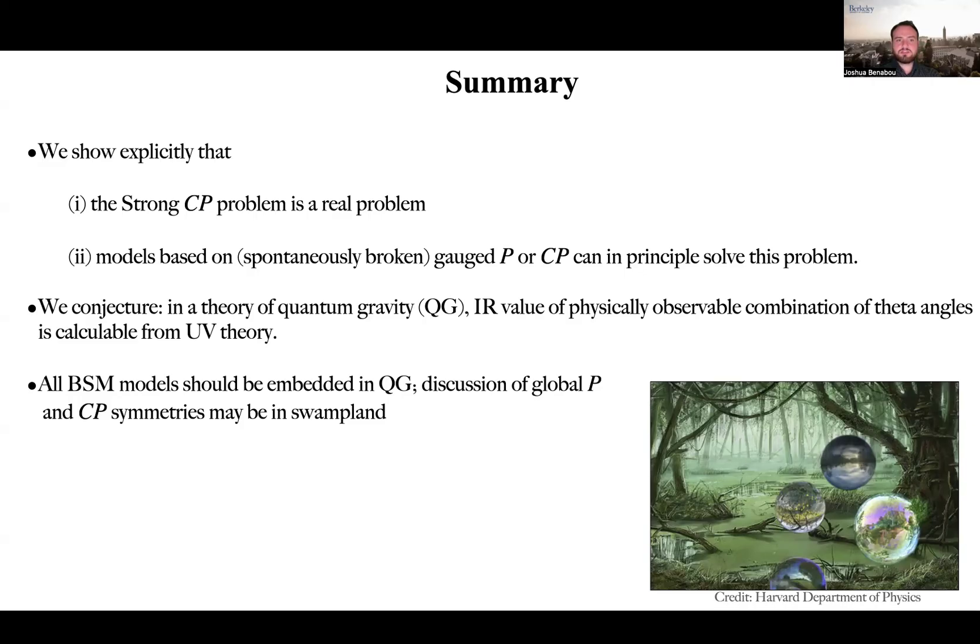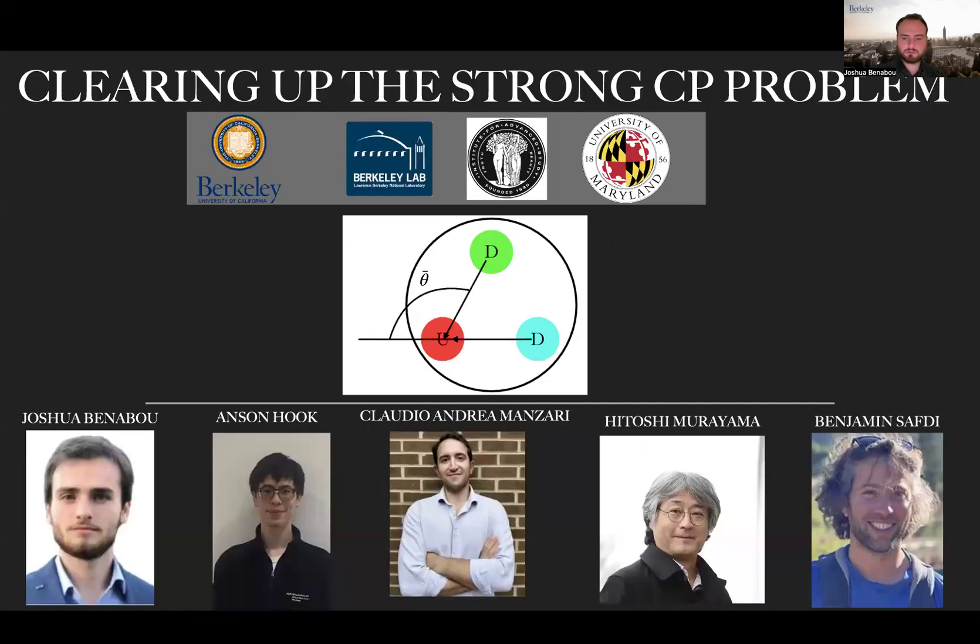Further, we conjecture that in a theory of quantum gravity, the IR value of the physically observable combination of theta angles is calculable from the UV theory. As all BSM models should be embedded in quantum gravity, this leads us to question whether the entire discussion of global P and CP symmetries in the work of Kaplan, Melia, and Rajendran is not in a swampland. Thank you for listening, and we hope that you'll check out the paper.